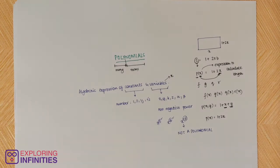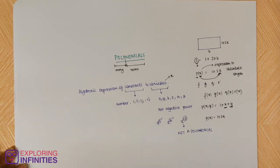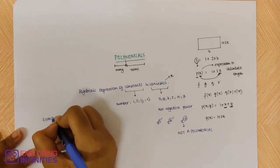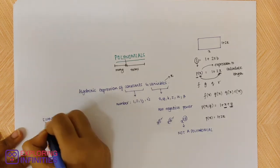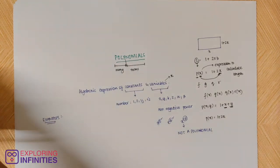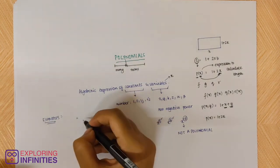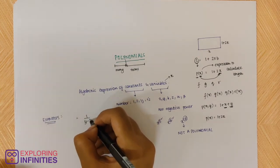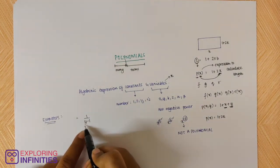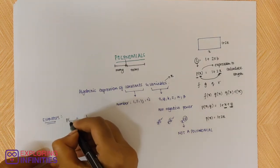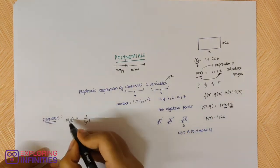Now let us take a few examples to see whether an expression is a polynomial or not. I will write a few equations. Let me say 1 divided by (y − 1). Here y is the variable, so you write it as p(y) because it's defined by y.